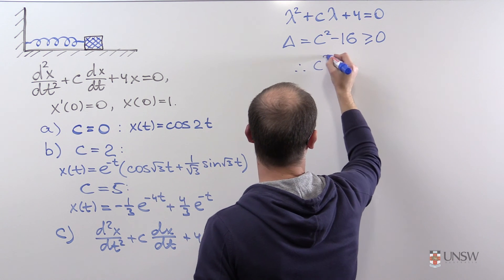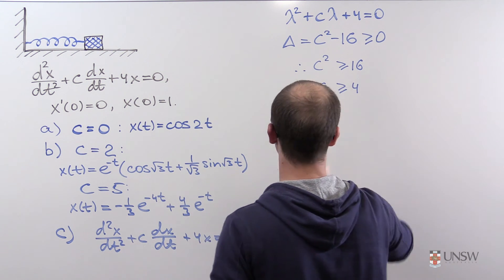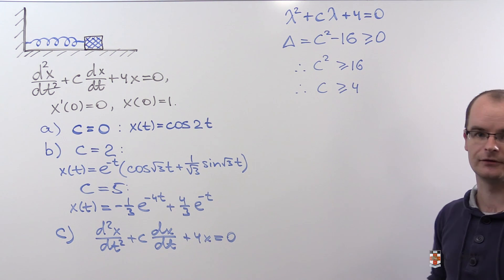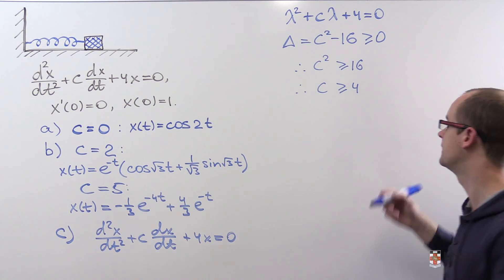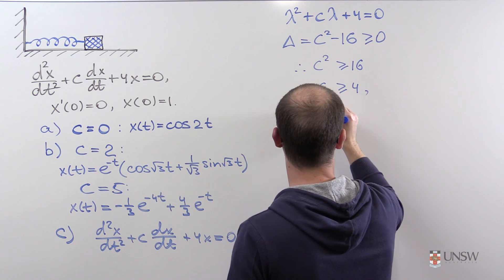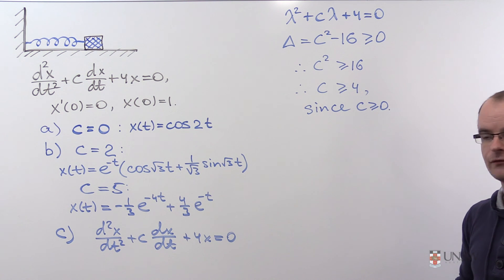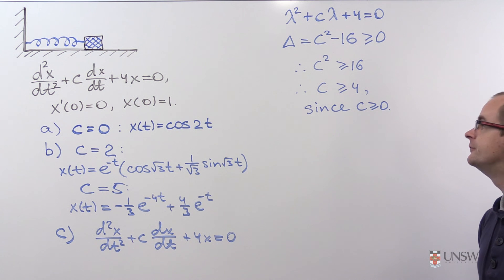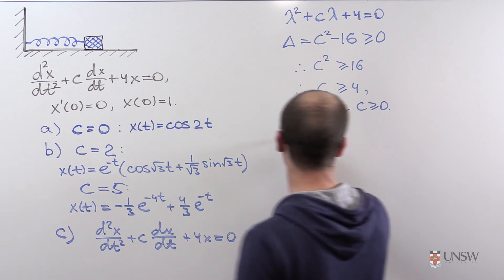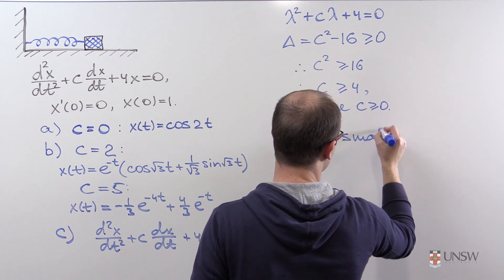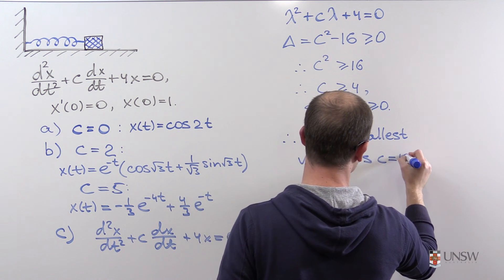Therefore c squared must be greater than or equal to 16, so c must be greater than or equal to 4. We do not consider negative values because c is the coefficient of friction and cannot be negative. Therefore the smallest possible value of c that guarantees the system does not oscillate is c equals 4. Thank you.